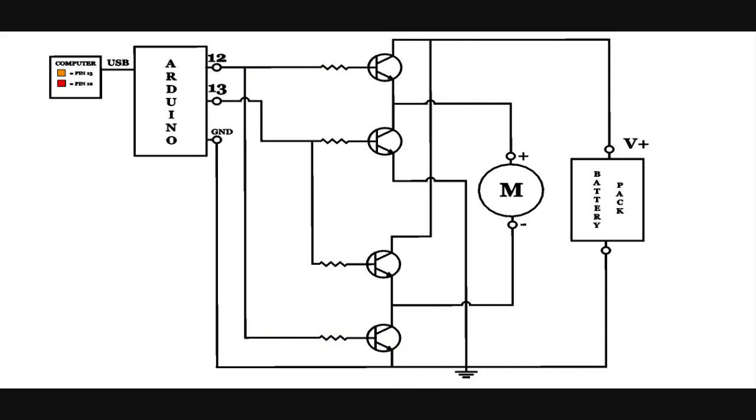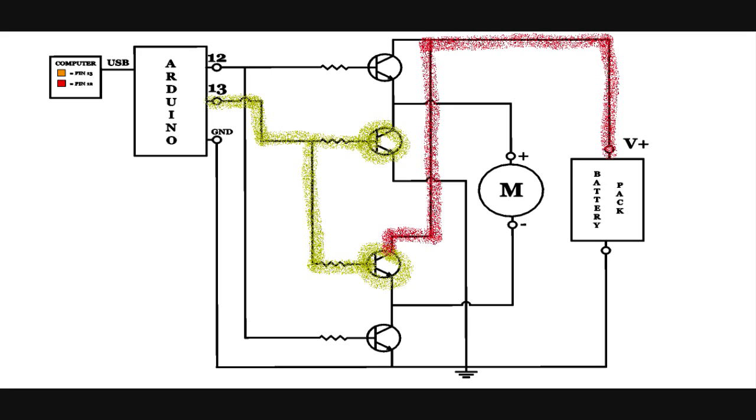Okay, now let's click the yellow square on the computer screen, which sets pin 13 on the Arduino high. That turns on the other two transistors. Again, the power current passes through the first on transistor to the motor again,